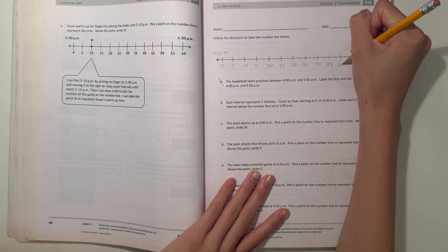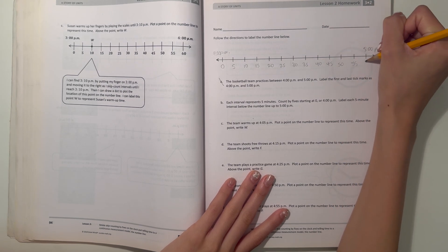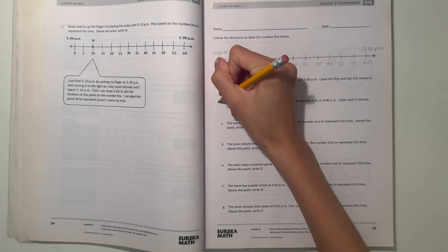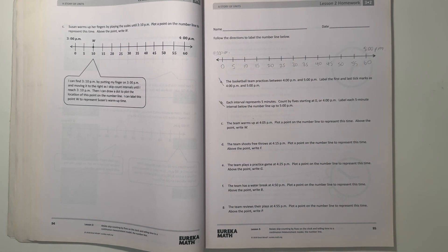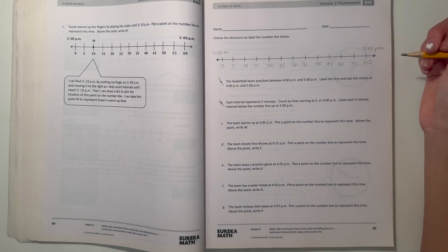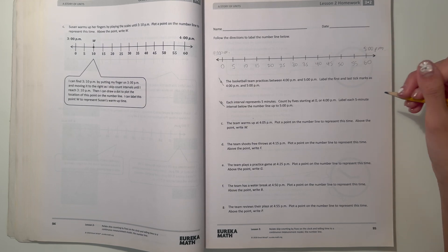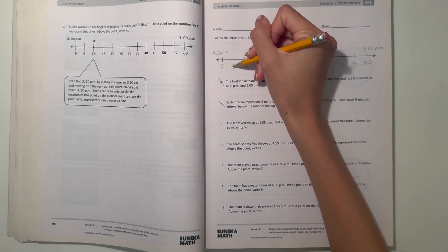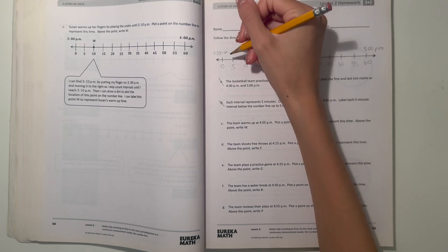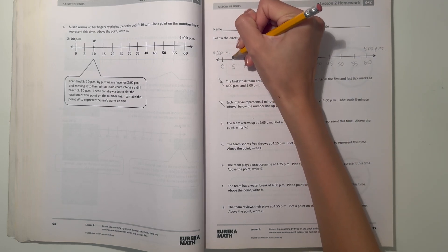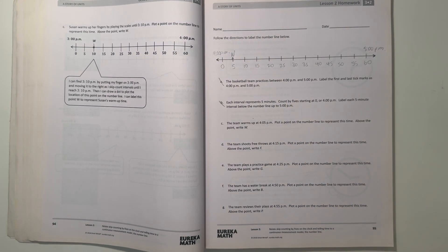So let's cross that one. Now part c says: the team warms up at 4:05 p.m. Plot a point on the number line to represent this time. Above the point, write W. So 4:05 - 5 over here - so we plot a point over here and we write W to mark it as warm-up.